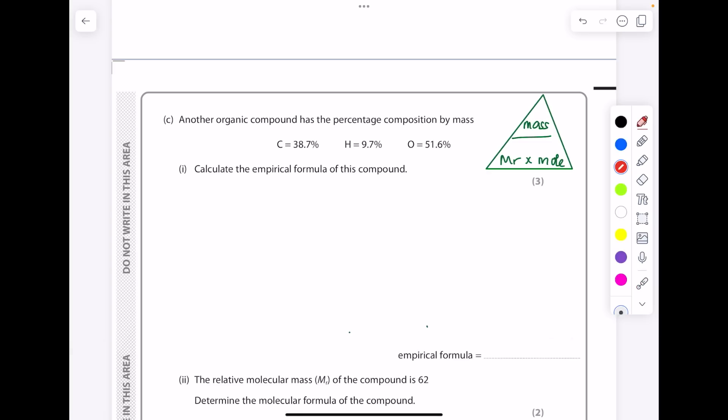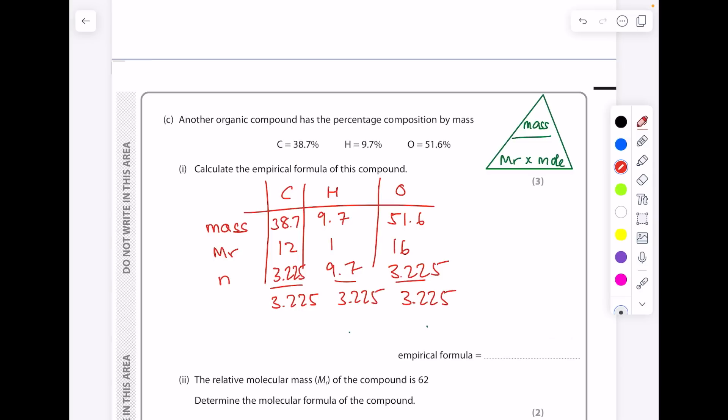Remember, you can use that table with so many different questions, such as this empirical formula one. I'm just going to show you that it works here too. So if in doubt, even if you're not sure, do just try and find number of moles somewhere. That will definitely get you some marks. So what's our mass? Just be careful. Because these are all proportional, you're allowed to steal the percentages as being your mass. Don't let that confuse you. Then use your periodic table to find the relative atomic masses. The number of moles is 38.7 divided by 12. Then divide by the smallest number. So look at these numbers. What's the smallest number? So your ratio becomes 1 to 3 to 1.